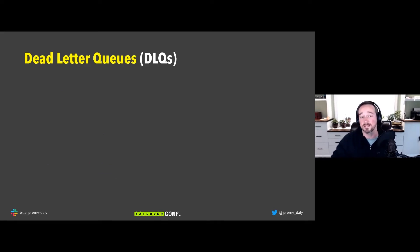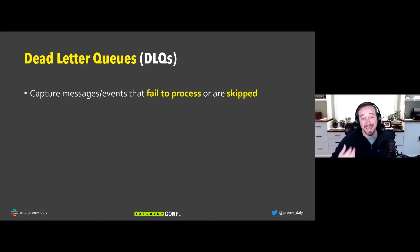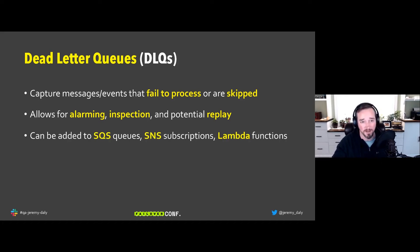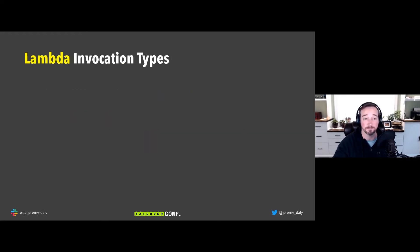Dead letter queues allow you to capture any event or message that fails to process or gets skipped — sometimes messages are skipped on purpose. You can set alarms, inspect the data, and replay failed events. In the AWS ecosystem you can add dead letter queues to SQS queues, SNS subscriptions, and Lambda functions.